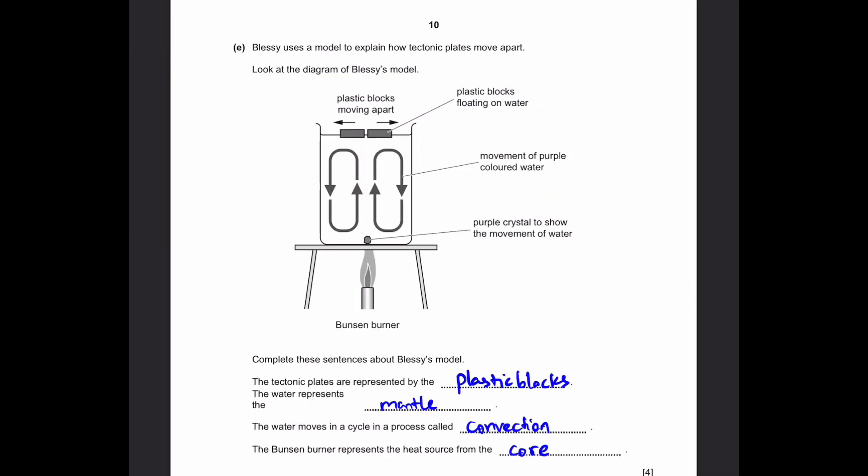Part E: Blessy uses the model to explain how tectonic plates move apart. Look at the diagram. Complete these sentences about Blessy's model. The tectonic plates are represented by the plastic blocks, because they are floating on top of the water. The water represents the mantle, of course, because these tectonic plates float on the mantle and blocks float on the water. The water moves in a cycle in a process called convection. You can also write convection current, no problem, but convection is a simple answer. The Bunsen burner represents the heat source from the core of the Earth, or the center of the Earth is also acceptable.